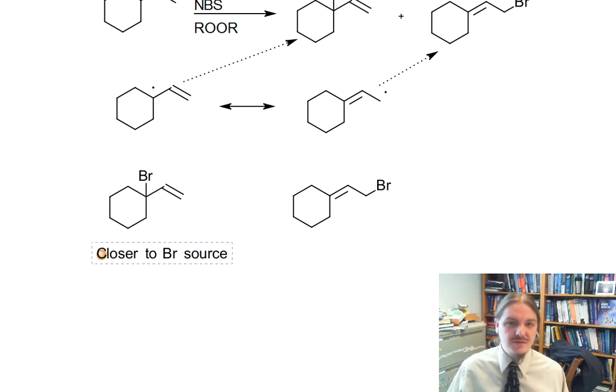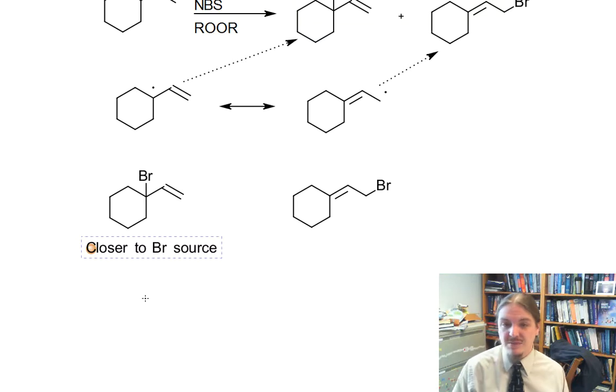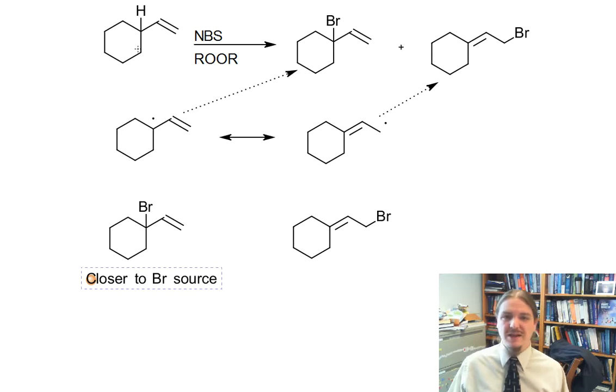So the first structure, the one that we would normally predict, might be more likely as the major product because the radical that forms, it's going to be closer to the bromine source and the bromine source being related to the thing that formed the radical.